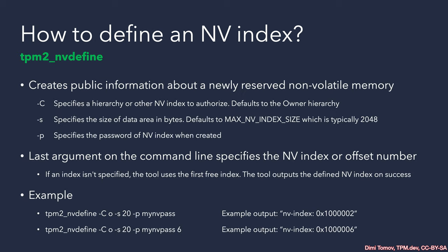The TPM2 NV Define tool helps us create NV indexes. By default it sets the NV index type to ordinary, meaning we can use write operations in bulk. Be aware that the maximum bulk size is typically about 2048 bytes. It is important that when we create our NV index, we specify some sort of password so only we can read the stored data. NV indexes are created on demand, so their numbering depends on how many NV indexes we have so far.